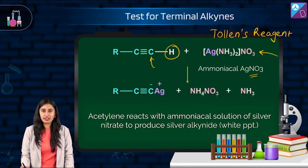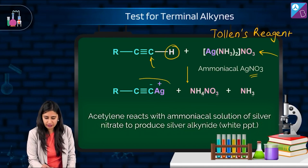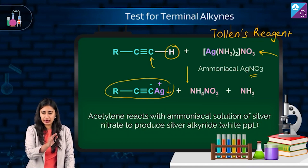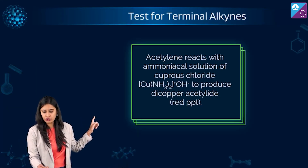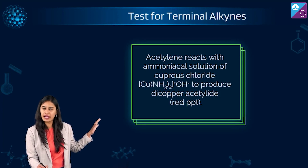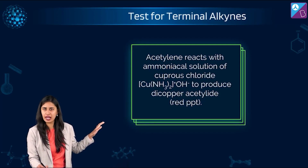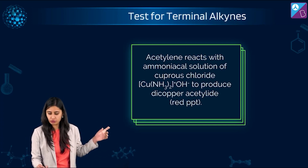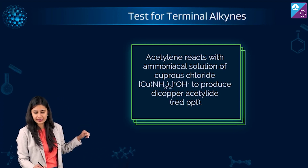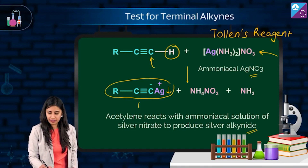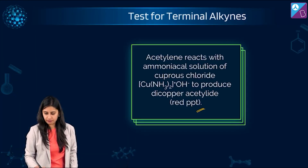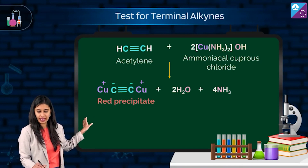What is formed is a precipitate observable with the naked eye. Acetylene also reacts with ammoniacal solution of cuprous chloride. A similar reaction involving the coordinate complex occurs, but the color of the precipitate is different — it produces dicopper acetylide. So with silver nitrate we get a white precipitate, and with cuprous chloride we get a red precipitate.